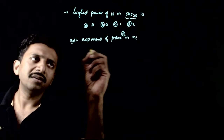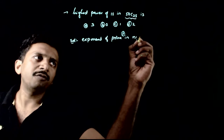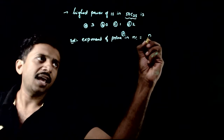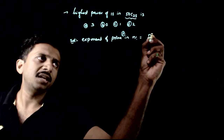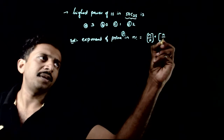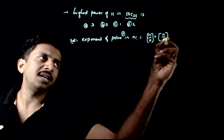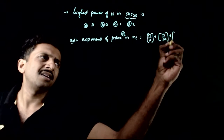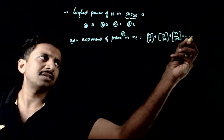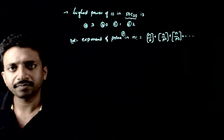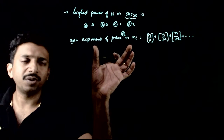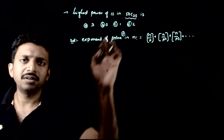What is the formula? The exponent of prime p in n factorial is: floor(n/p) + floor(n/p²) + floor(n/p³) + and so on. This is the formula for the exponent of prime p in n factorial.